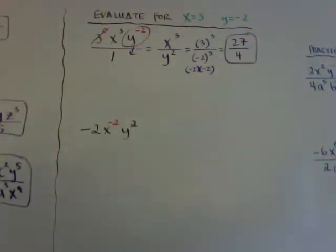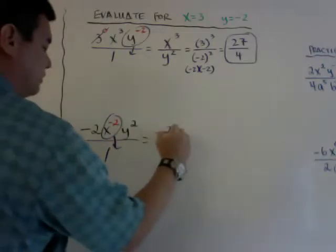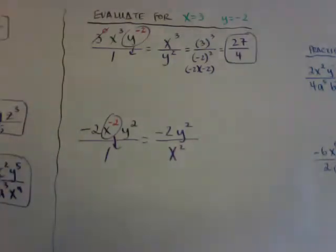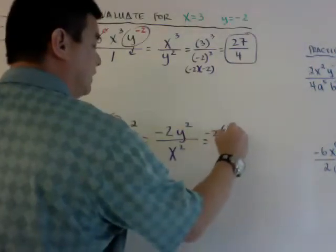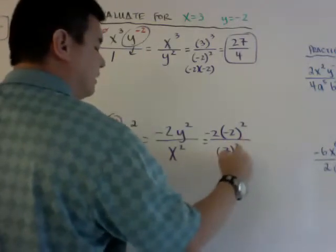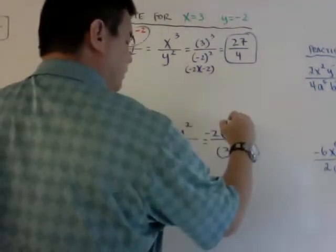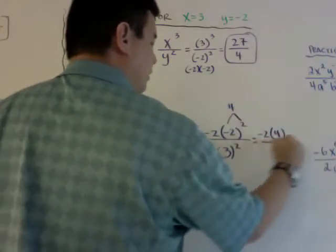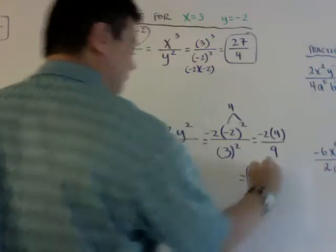Here's another one. The only thing I move down is x to the negative 2, leaving negative 2y squared over x squared. Now substituting: negative 2 times negative 2 squared all over 3 squared. Remember PEMDAS — don't multiply negative 2 and negative 2 first. Do the exponent first: negative 2 squared equals 4. So it becomes negative 2 times 4 over 9, which is negative 8 over 9. That's how you evaluate with negative exponents.